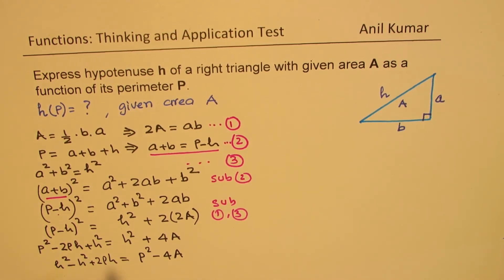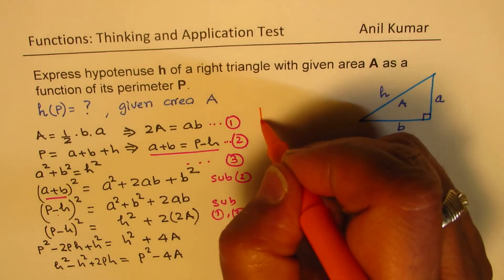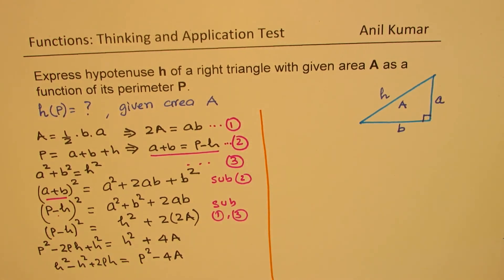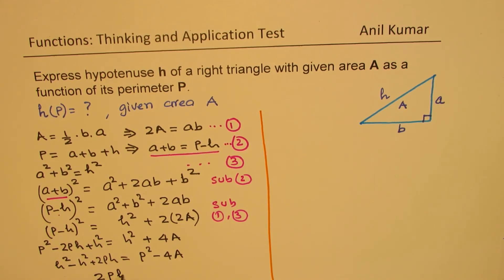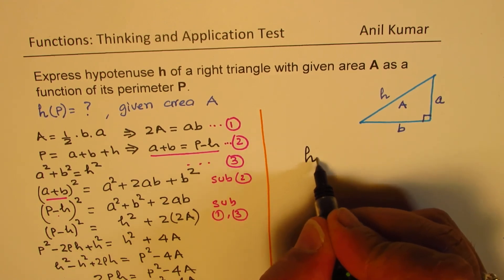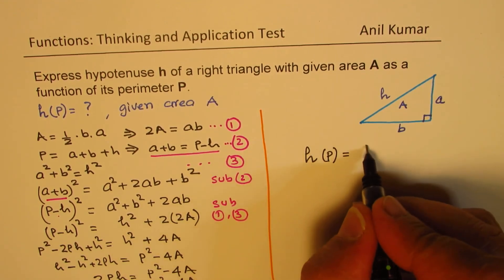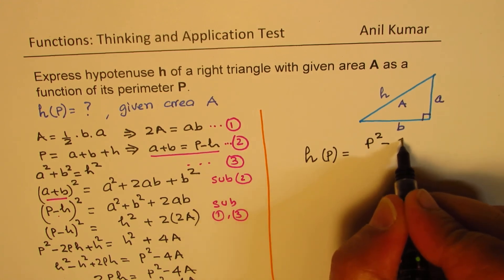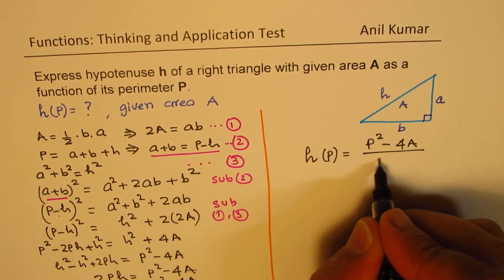Now here, h squared and h squared cancel. So let's write down here first. 2Ph equals P squared minus 4A. And from here, you get what h is. So h equals P squared minus 4A divided by 2P. So that is how we could isolate hypotenuse as a function of perimeter. The hypotenuse as a function of perimeter can be written as (P squared minus 4A) over 2P.